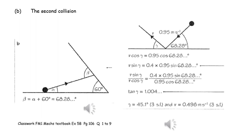This diagram shows the impact with the plane inclined at 60 degrees to the horizontal. The object is coming in with a velocity of 0.95 at an angle of 68.28 degrees and coming away from the plane with an unknown speed and unknown angle. We can work out the components of velocity before impact parallel and perpendicular to the surface, then apply conservation of linear momentum and Newton's experimental law to work out the required angle and speed.